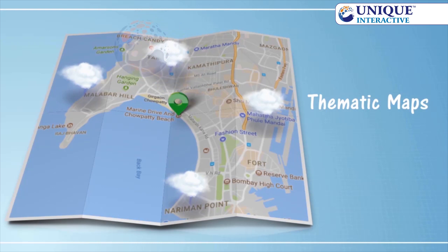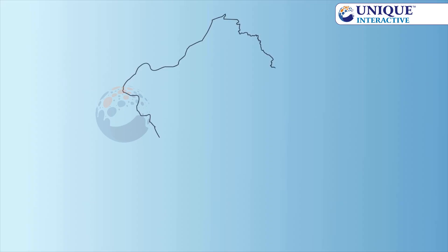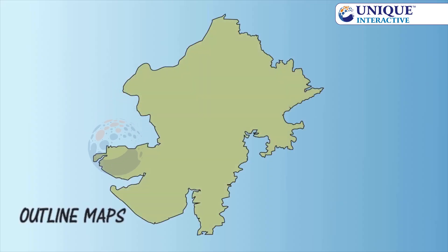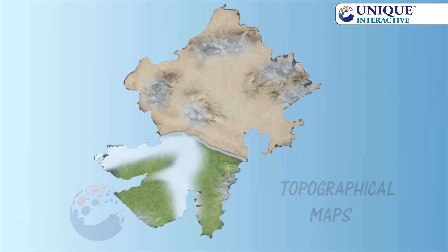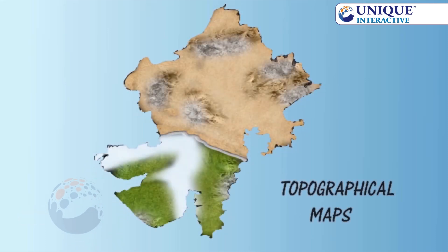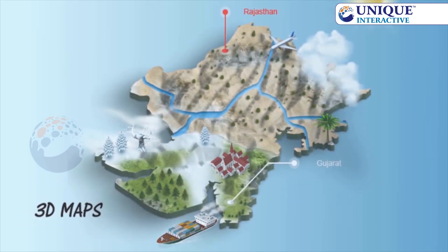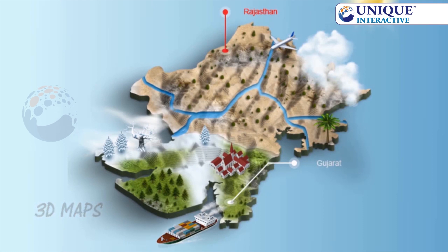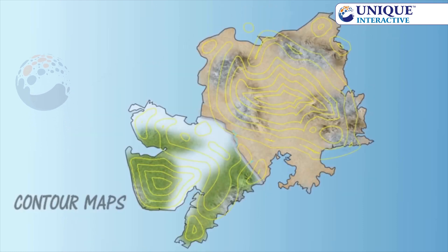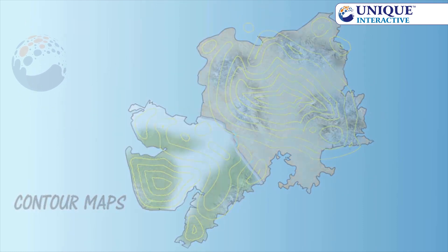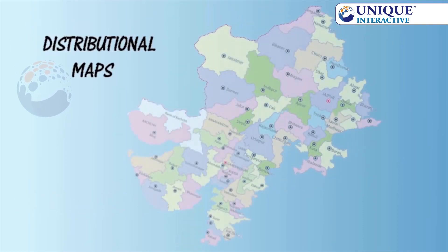There are several types of maps such as outline maps, topographical maps, 3D maps, contour maps, and distributional maps.